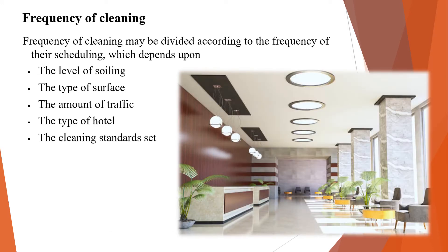The frequency of cleaning may be divided according to the scheduling, which depends on the level of soiling — meaning the amount of dust and dirt coming into your public area. Next is the type of surfaces; for example, in this picture you can see marble flooring, wooden panels, hanging bulbs, acrylic sheets, and glass windows, each requiring a different cleaning technique. The amount of traffic is calculated by the footfall — the number of guests entering, using, or crossing the lobby. In business-class properties, traffic in the lobby will be higher compared to a resort property.